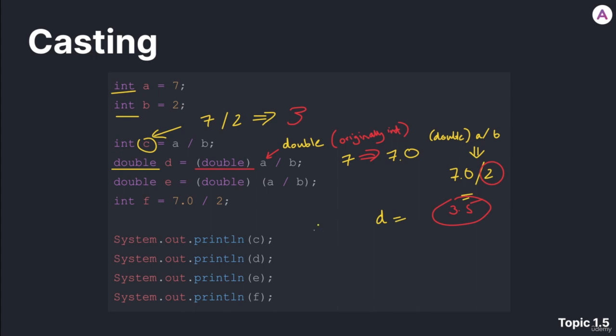Alright, and this works because d is now 3.5. This works because d is a double. d was declared as a double up here. So it works. Let's move on to the next one.